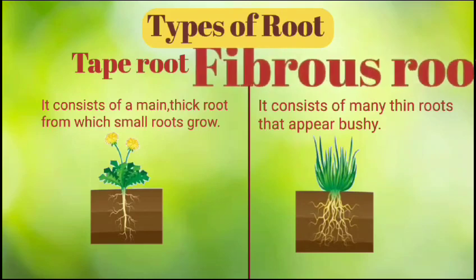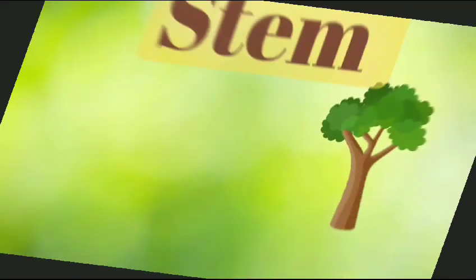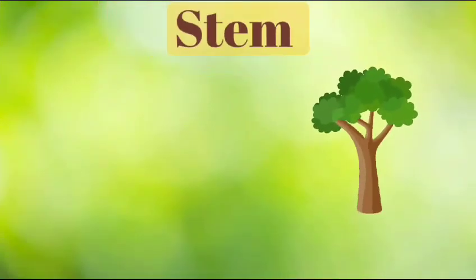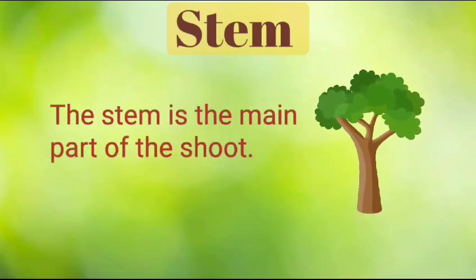Fibrous Root consists of many thin roots that appear bushy. There is no main root. Plants such as grass, wheat and onion have fibrous roots.